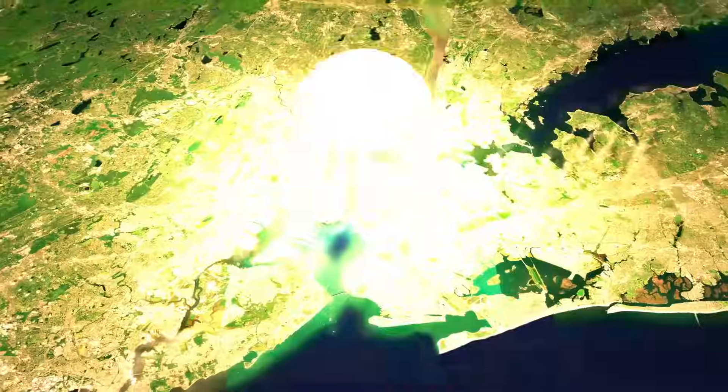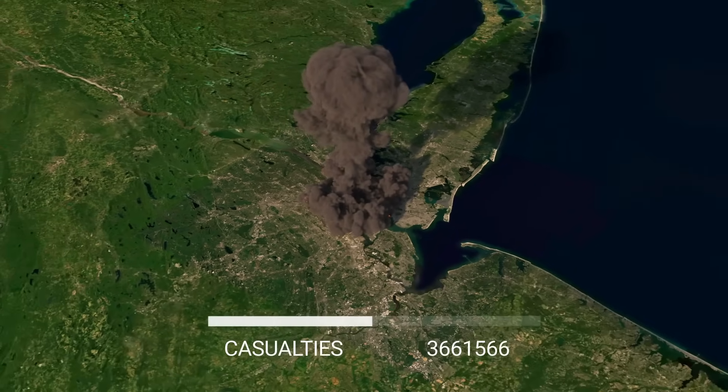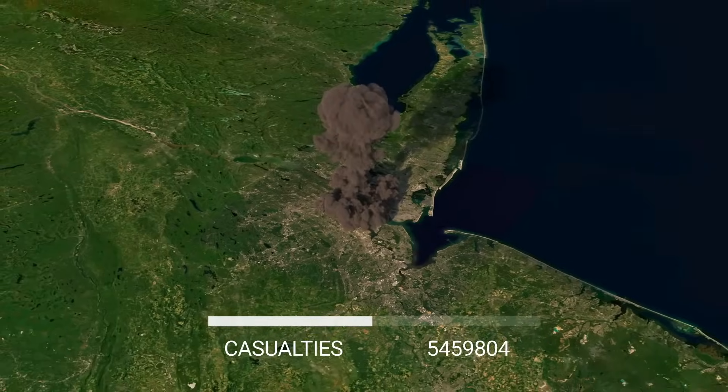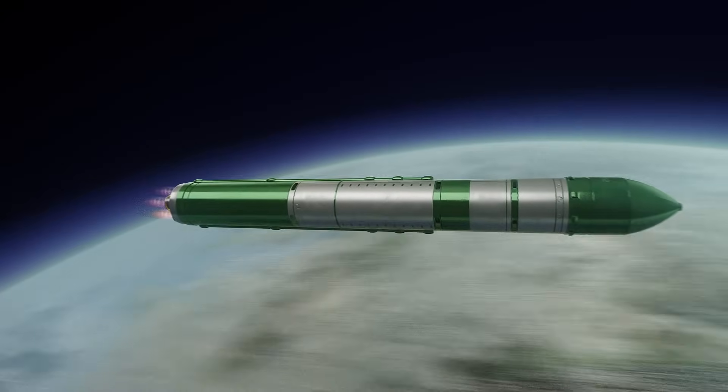If a 20 megaton nuclear warhead attacks New York, it could look like this. A massive nuclear explosion would kill about 5 million people, and the fallout would travel up the entire coast and reach the Canadian border.